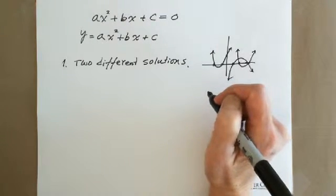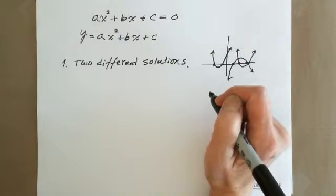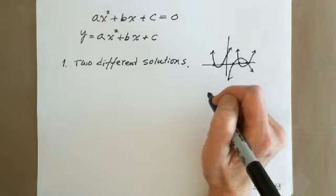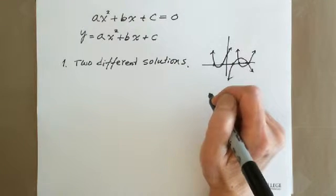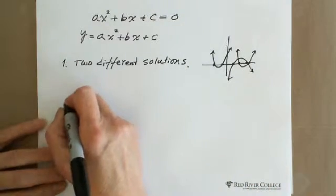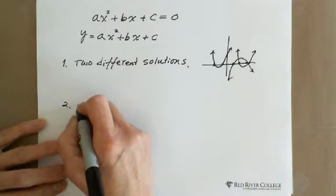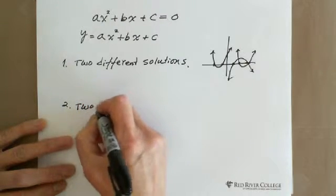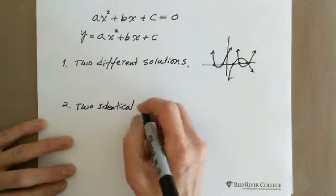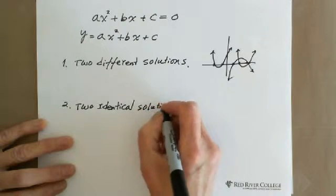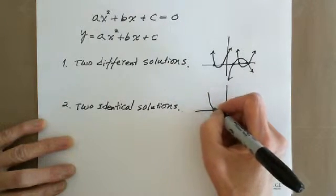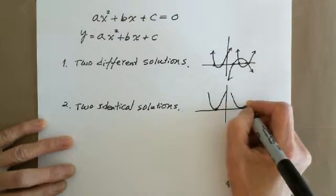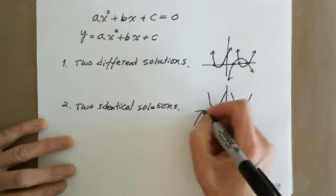How do we know, or how can we predict? This is the key: we can predict whether the quadratic function has two solutions, one solution, or no solution. The second case is one solution, which we call two identical solutions — meaning the parabola is touching the x-axis at only one point.